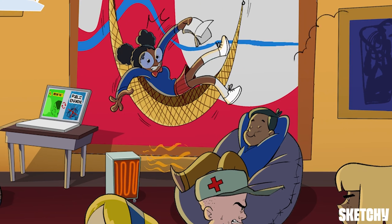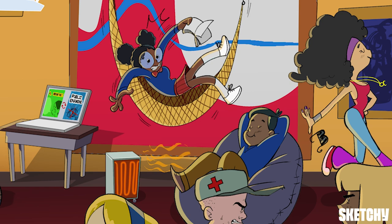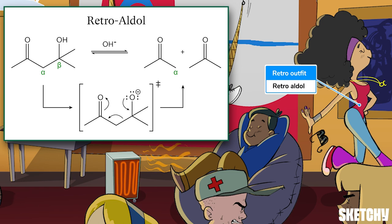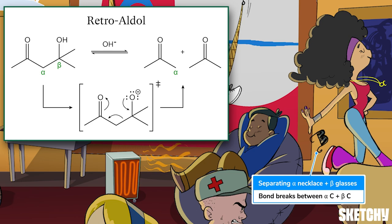We've got one last reaction in the aldol family to learn: the retroaldol. Retro meaning roughly go back in time, just like this chess star is trying to do as she embraces her mom's 70s wardrobe. In a retroaldol reaction, a molecule that looks like the product of a regular aldol addition goes backwards in time, reverting back to the starting materials that could have formed it. An enolate acts as a leaving group from a beta-hydroxycarbonyl — just like this gal is leaving to catch her next meeting with a disco club. When the enolate leaves, the bond between the alpha and beta carbons will break, which we've symbolized with the beta sunglasses our retro star is tossing behind her, separating them from her alpha necklace.